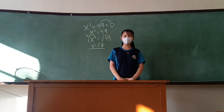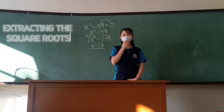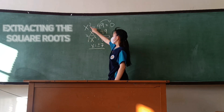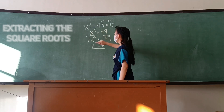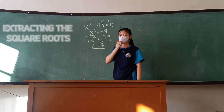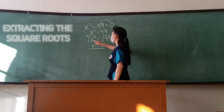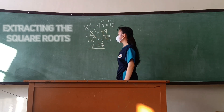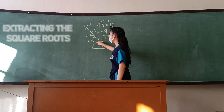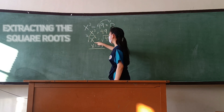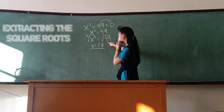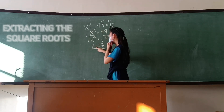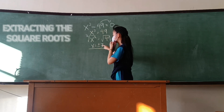Pasagutan natin itong problem: x² - 49 = 0. Ilipat natin yung 49 sa kabilang side, kaya nagiging x² = 49. Kailangan natin ng square root para makancel yung squared, tsaka ikakancel din natin yung 49. Kaya ang sagot ay x = ±7.